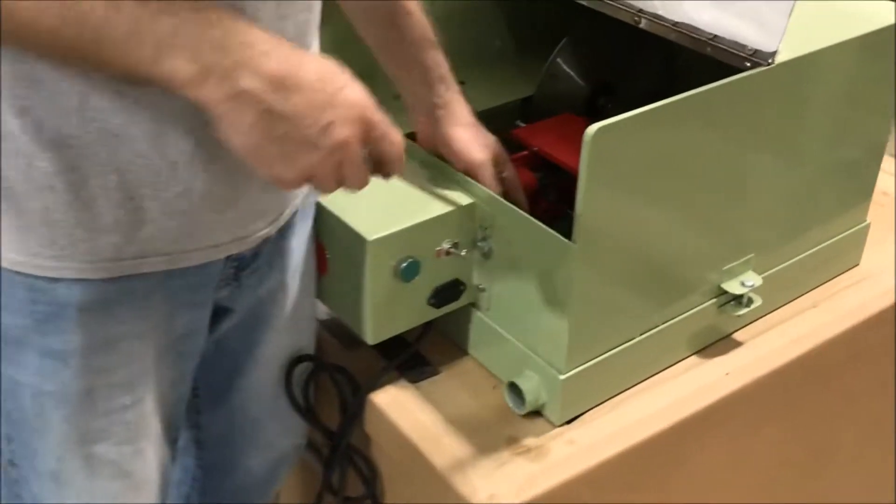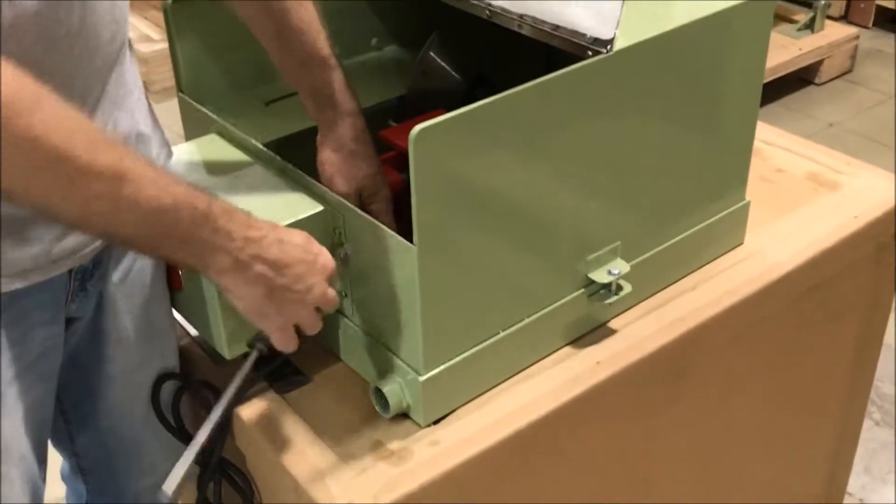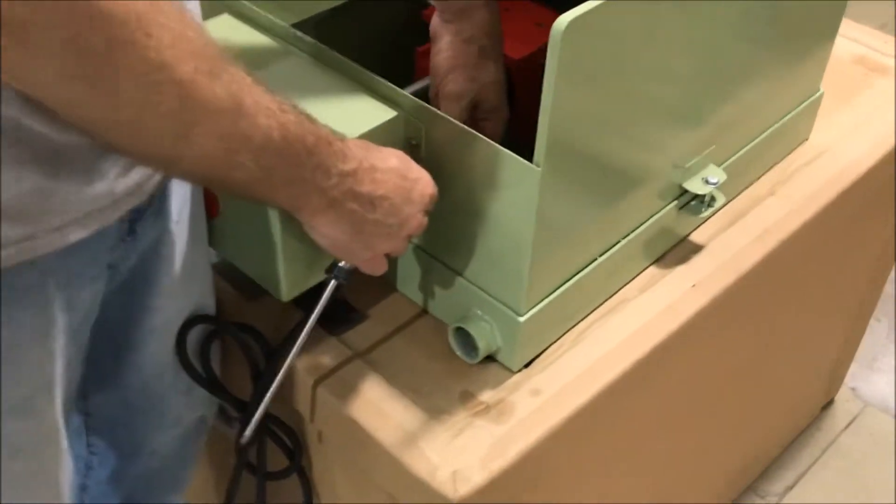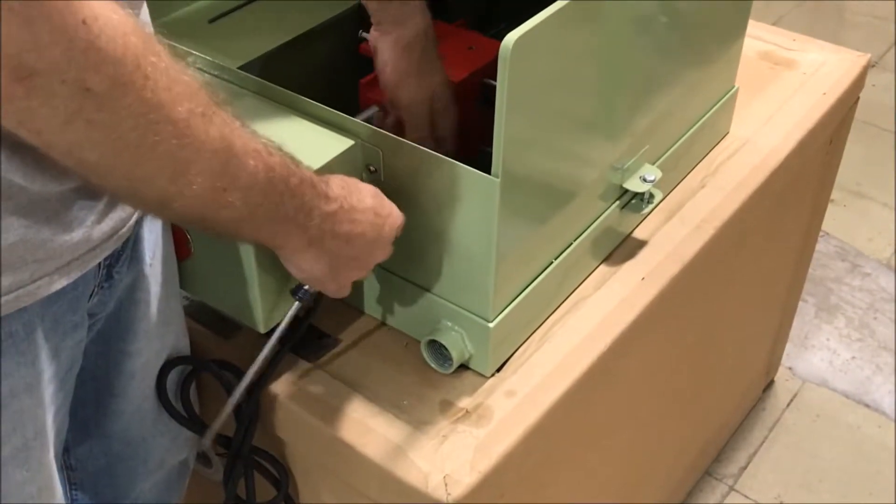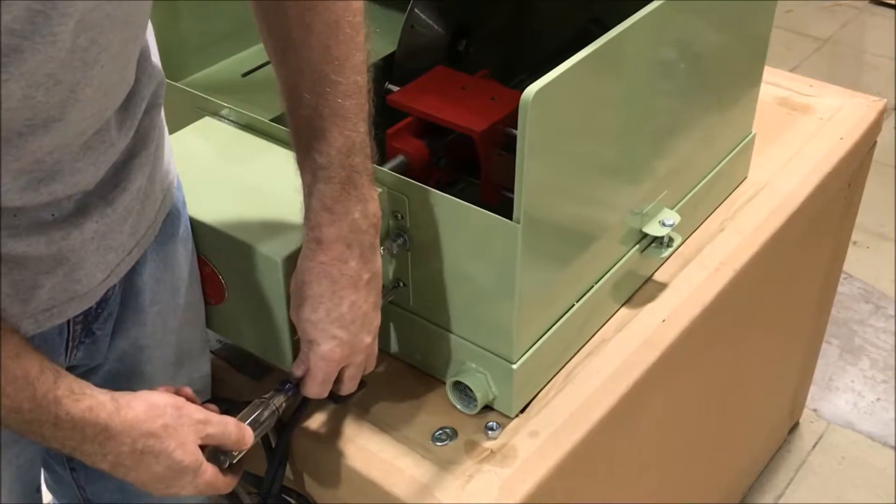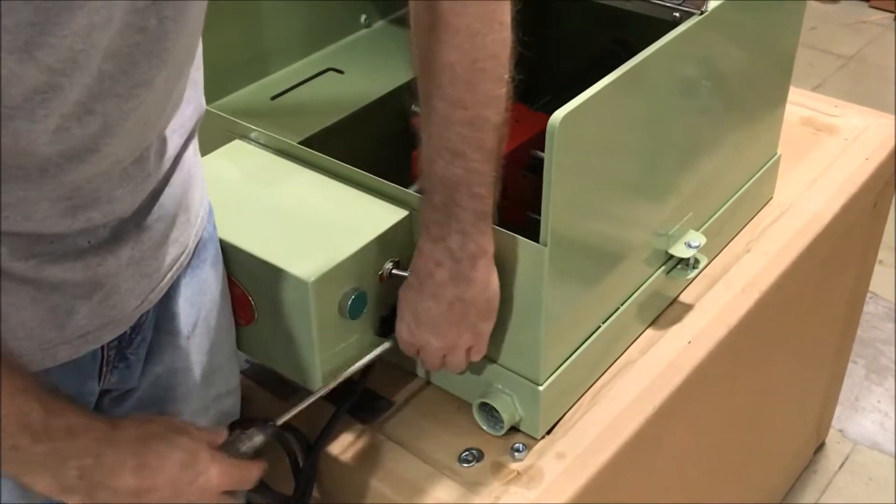So basically when we go to unhook our box, we're going to undo our—and I've loosened these up before so I don't waste a bunch of time undoing fasteners. We're going to undo our switch chain. We're going to take our four screws that hold the control box on and take those off.